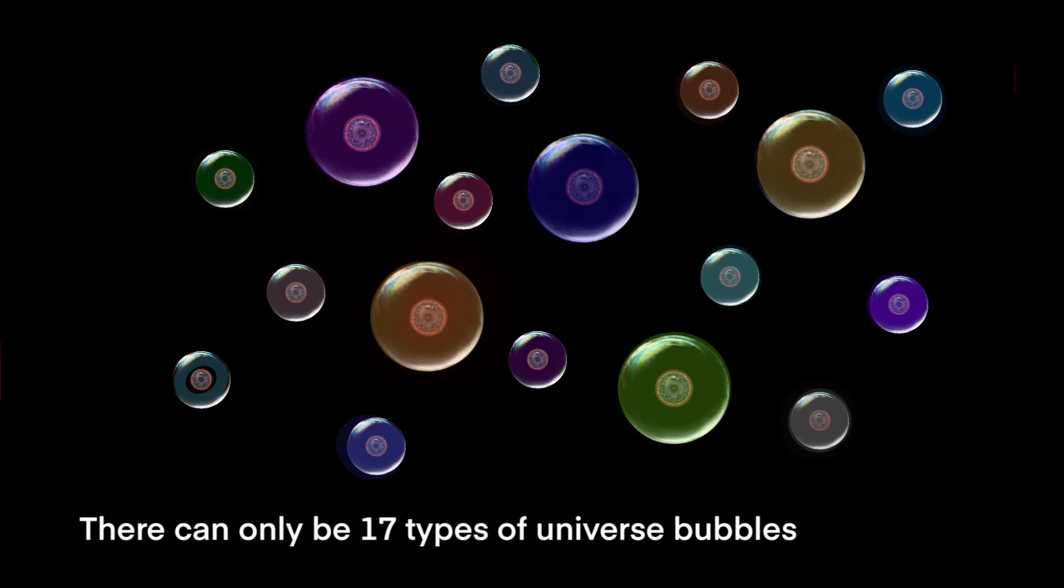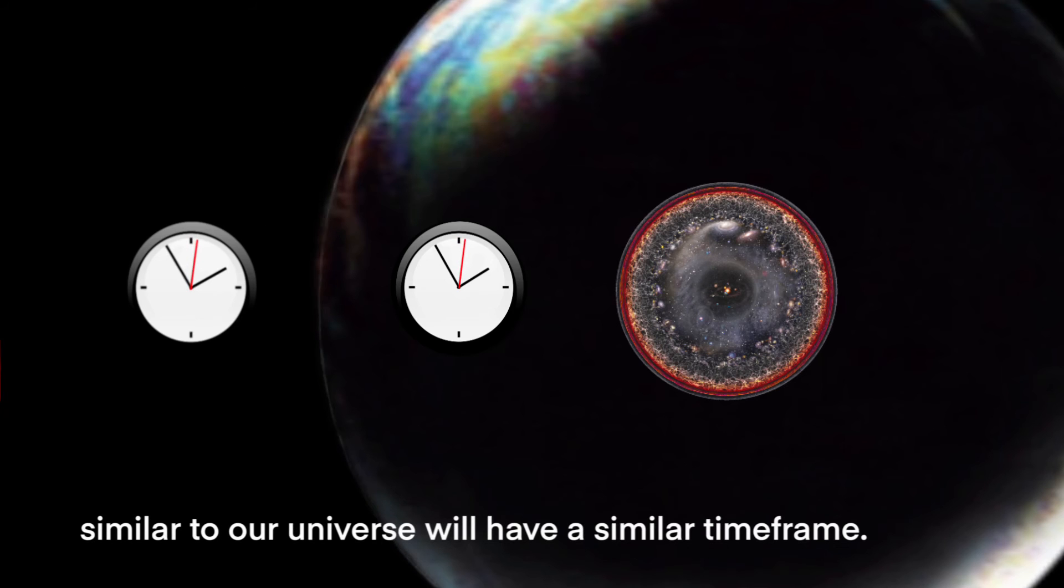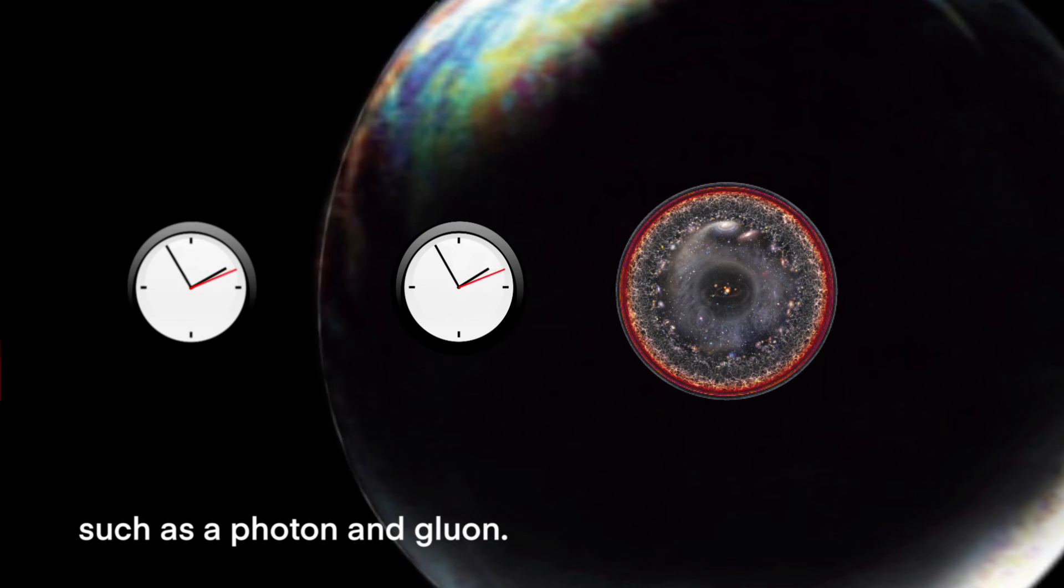There can only be 17 types of universe bubbles with slightly different physical laws of nature. Those 17 different universal laws, including the speed of light constant and its associated time frame, interact with our universe and other universes differently and manifest themselves as the 17 elementary particles such as electrons, charm quarks, and bosons. The universe bubbles that have physical laws similar to our universe will have a similar time frame. They might have a very faint time differential boundary, but the elementary particle in our world will have no measurable mass, such as a photon or gluon.